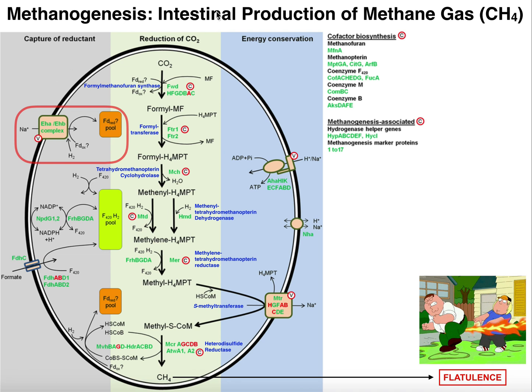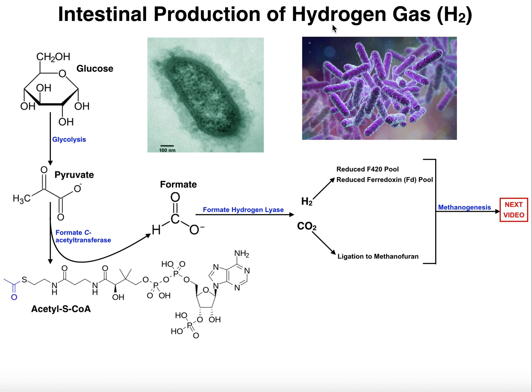In order to generate methane in the small intestines you also have to have production of hydrogen gas, because the hydrogen gas is actually used to generate reduced cofactors that are used in methanogenesis — we'll cover that process in the next video. For right now, this is going to be a fairly short video; we're just going to go over the three-step enzymatic process to generate hydrogen.